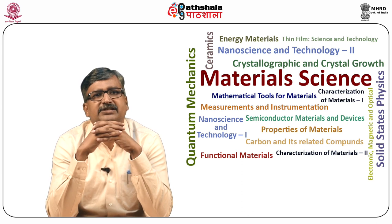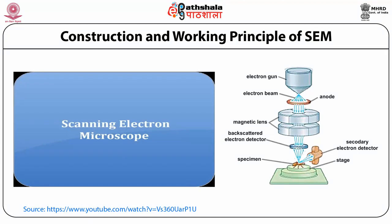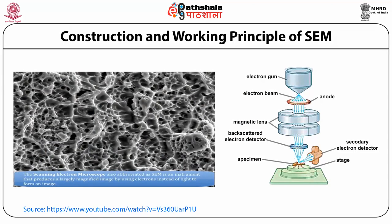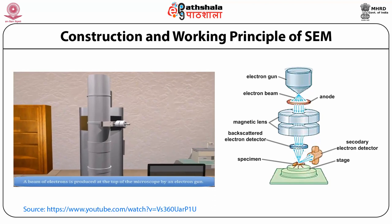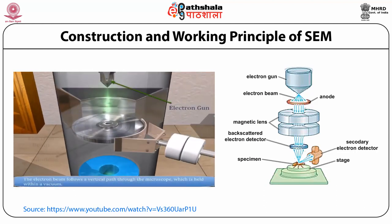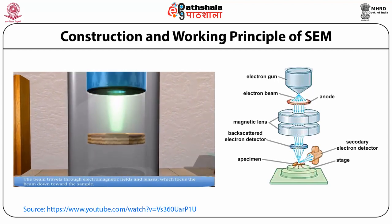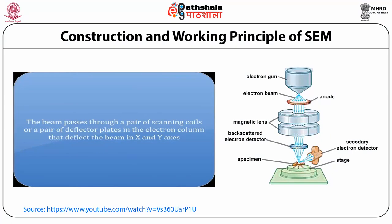The scanning electron microscope is an instrument that produces a magnified image using electrons instead of light. A beam of electrons is produced at the top of the microscope by an electron gun. The electron beam follows a vertical path through the microscope, traveling through electromagnetic fields and lenses which focus the beam down towards the sample. The beam then passes through a pair of scanning coils or deflecting plates in the electron column, which deflect the beam in the X and Y axes.